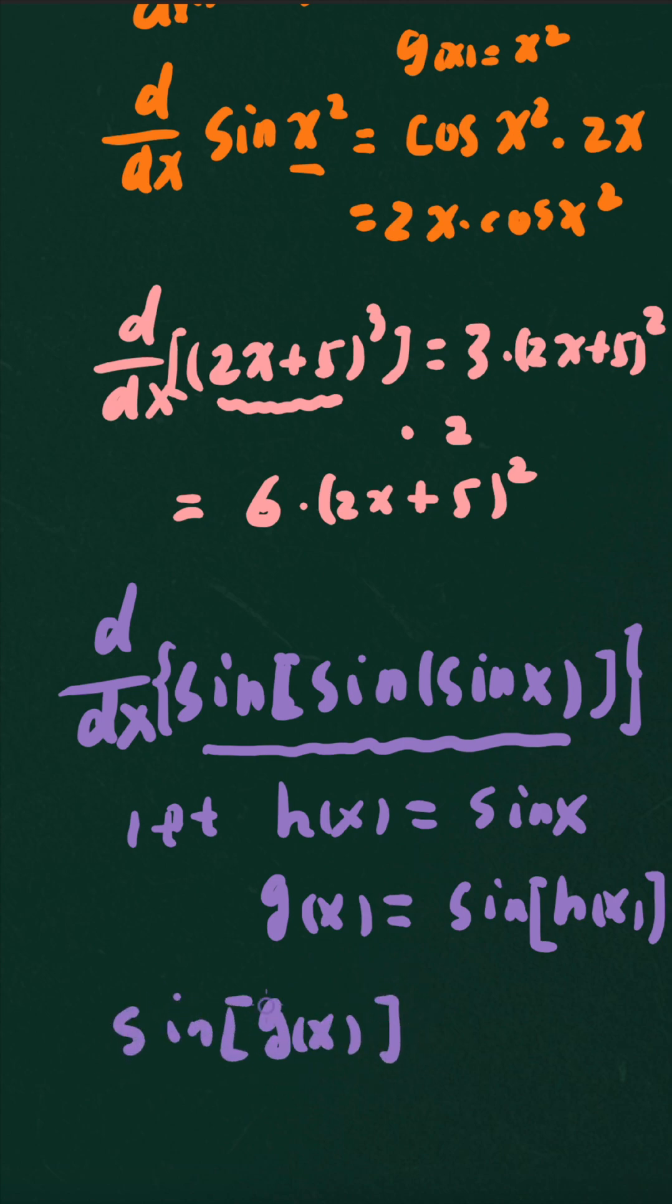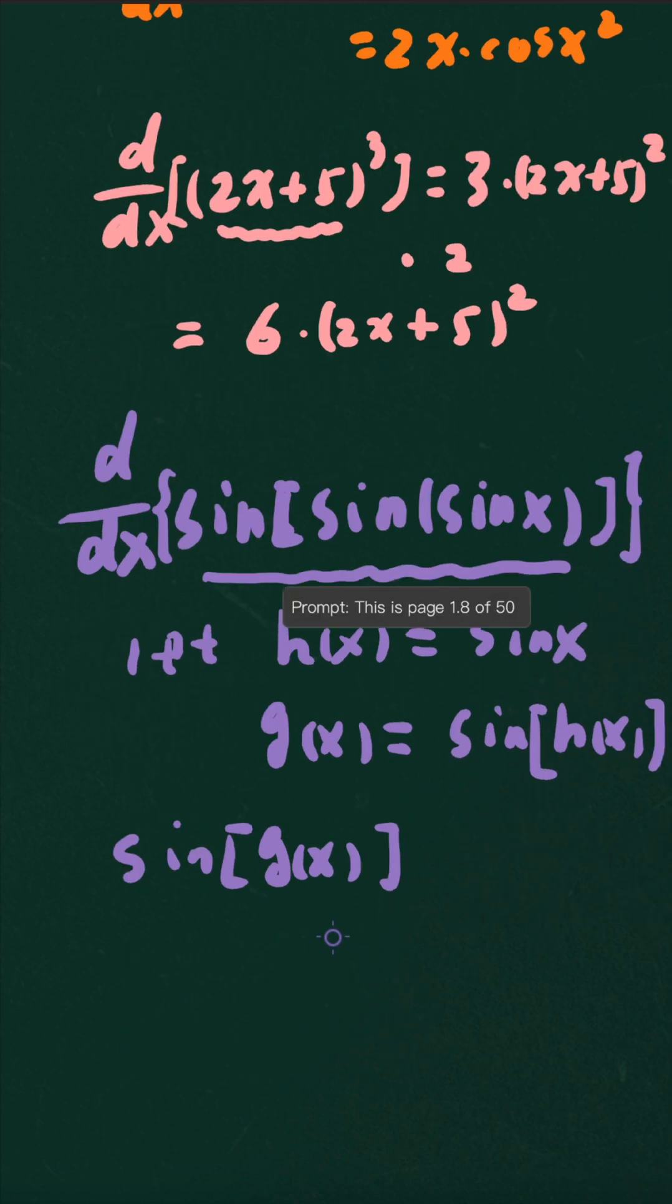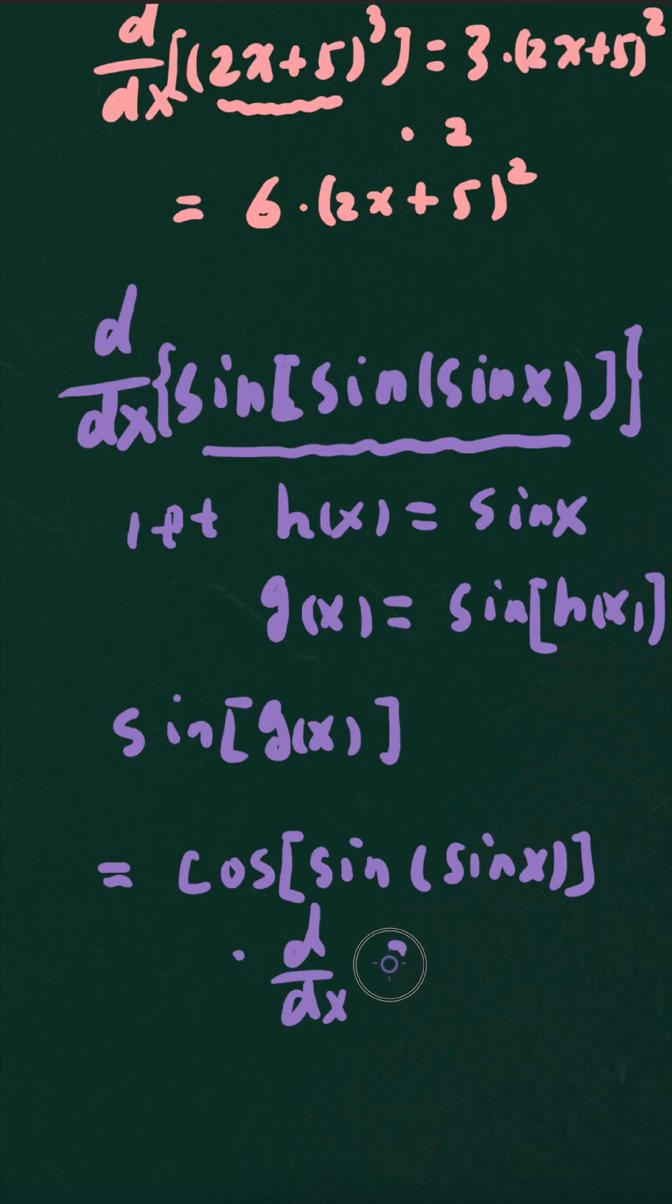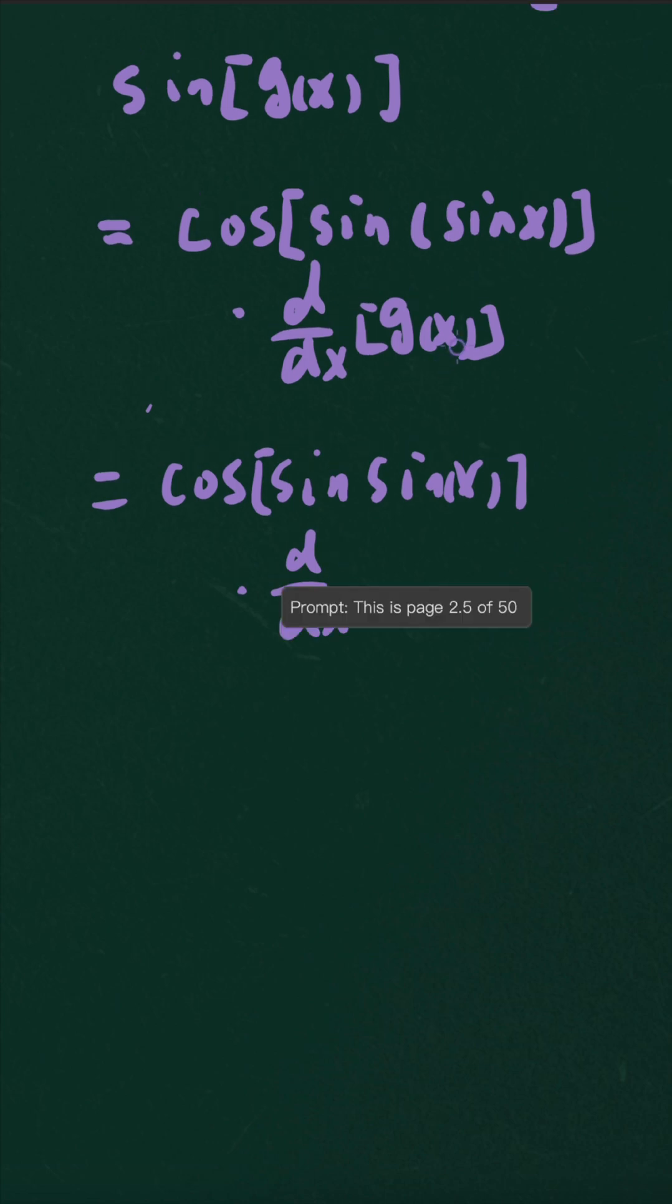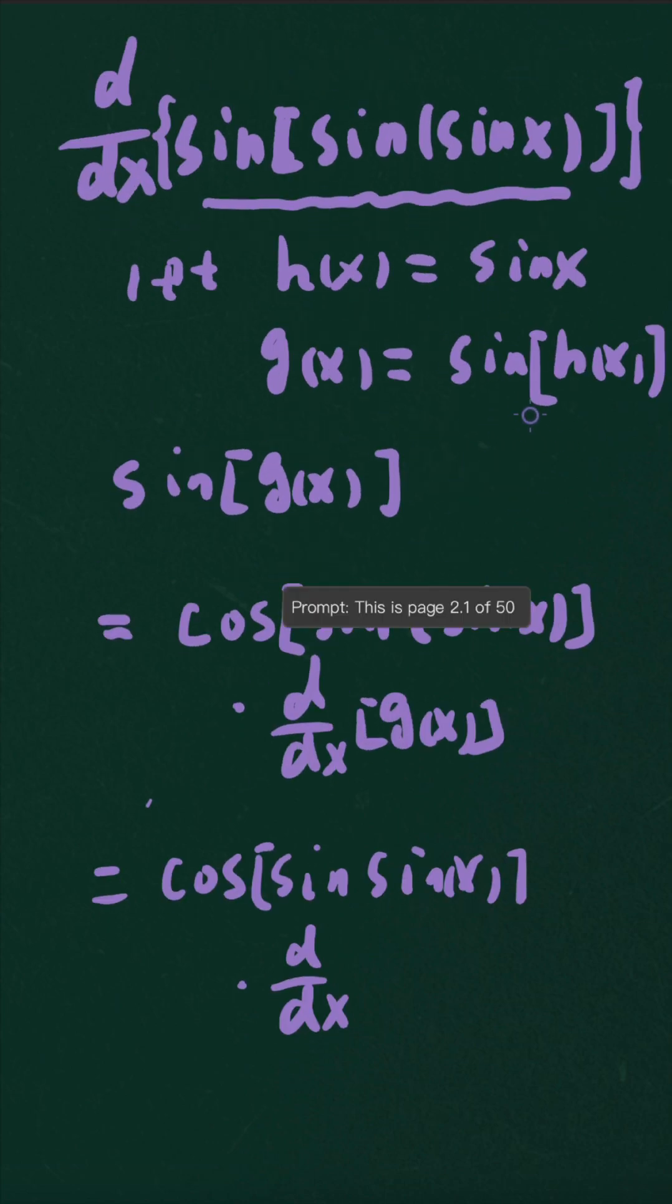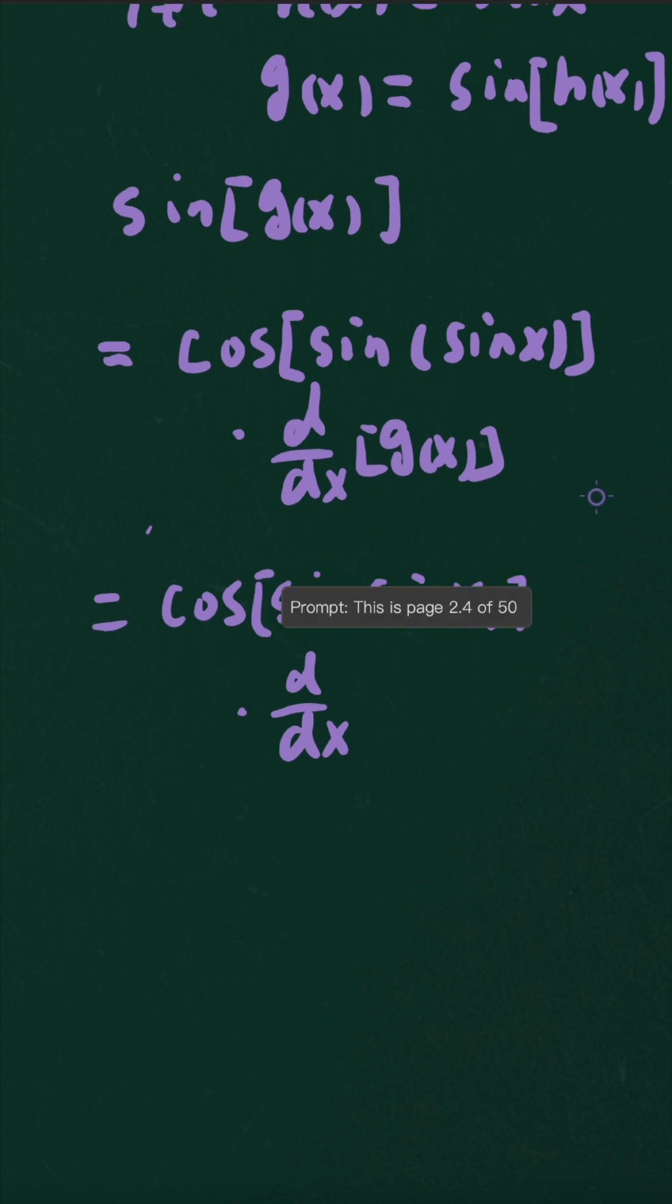So by using the formula, the derivative is equal to cosine(sine(sine x)) times the derivative of g(x), which is equal to cosine(sine(sine x)) times the derivative of, let's just plug in what g(x) is over here. So g(x) is equal to sine h(x), which is sine(sine x), basically.